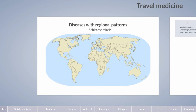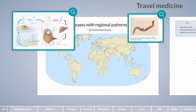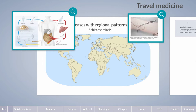Schistosomiasis is a parasitic disease acquired by contact with contaminated fresh water. It's caused by schistosoma trematodes, also known as blood flukes. The parasites usually live in fresh water where they mature in snails. The infectious larvae, also termed cercariae, can penetrate the skin when humans come into contact with contaminated water, causing a pruritic maculopapular rash.